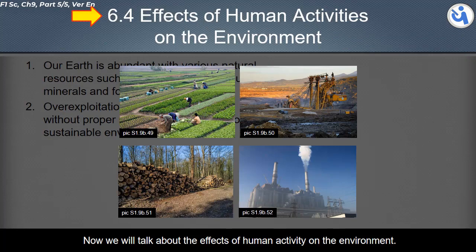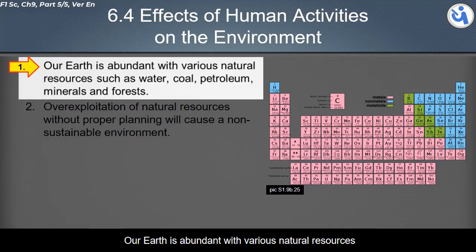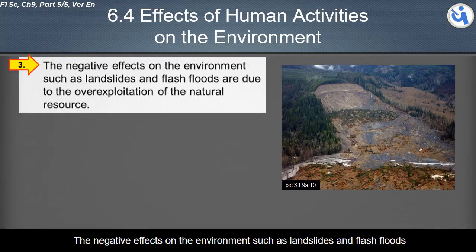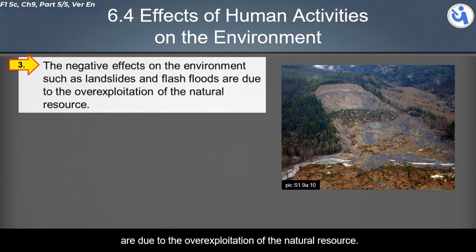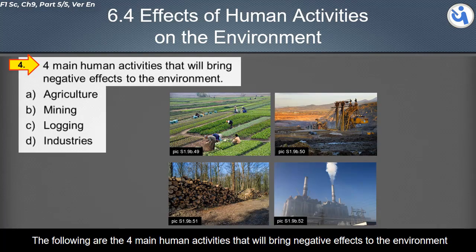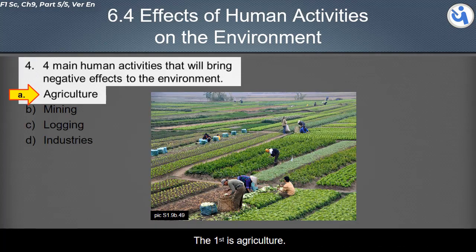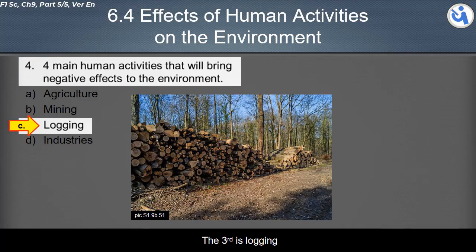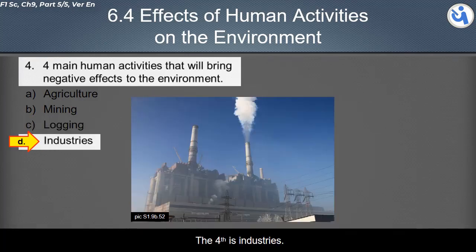Now we will talk about the effects of human activity on the environment. Our earth is abundant with various natural resources such as water, coal, petroleum, minerals, and forests. Over-exploitation of natural resources without proper planning will cause a non-sustainable environment. Negative effects on the environment such as landslides and flash floods are due to over-exploitation of natural resources. The four main human activities that bring negative effects to the environment are: agriculture, mining, logging, and industries.